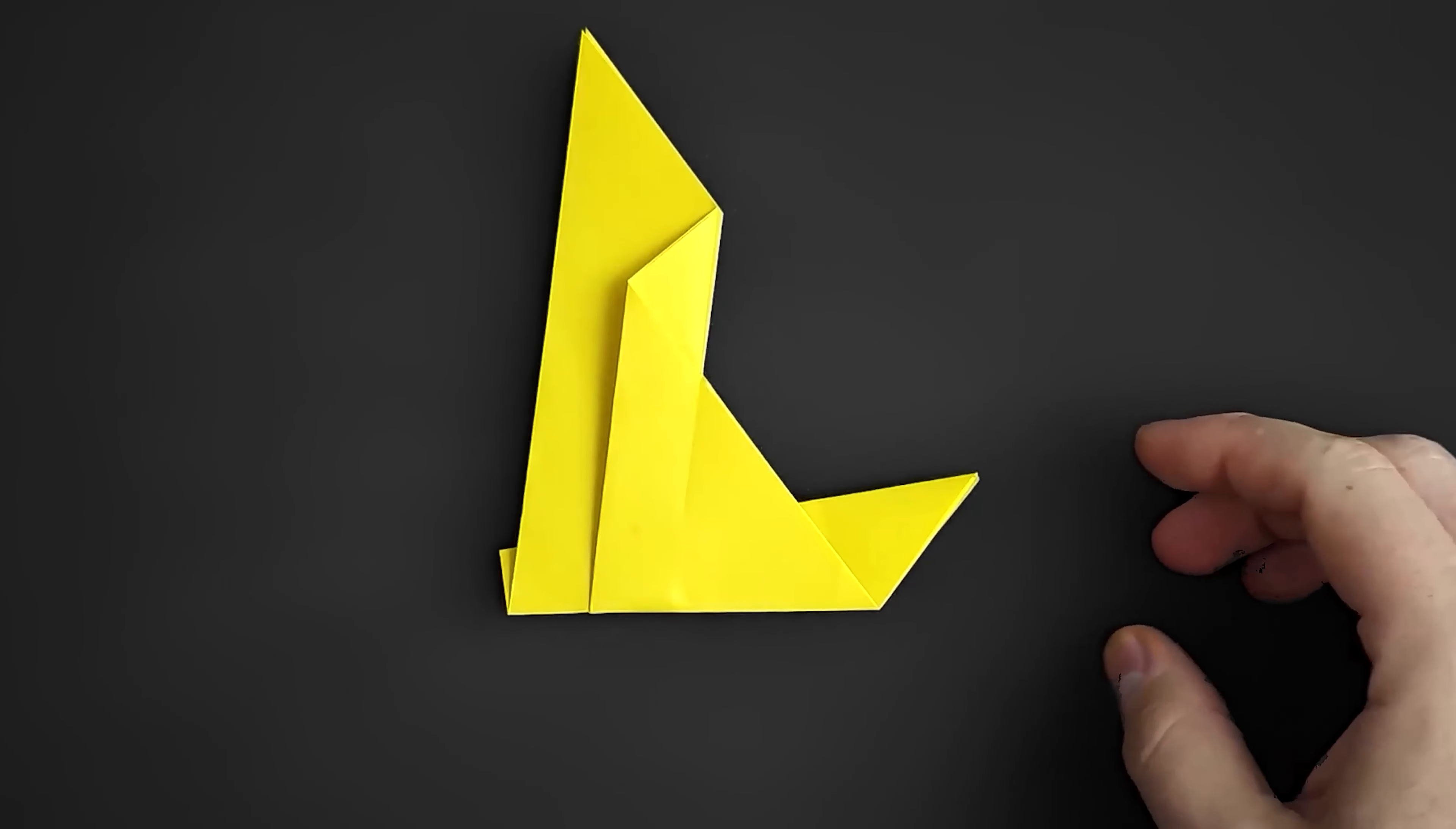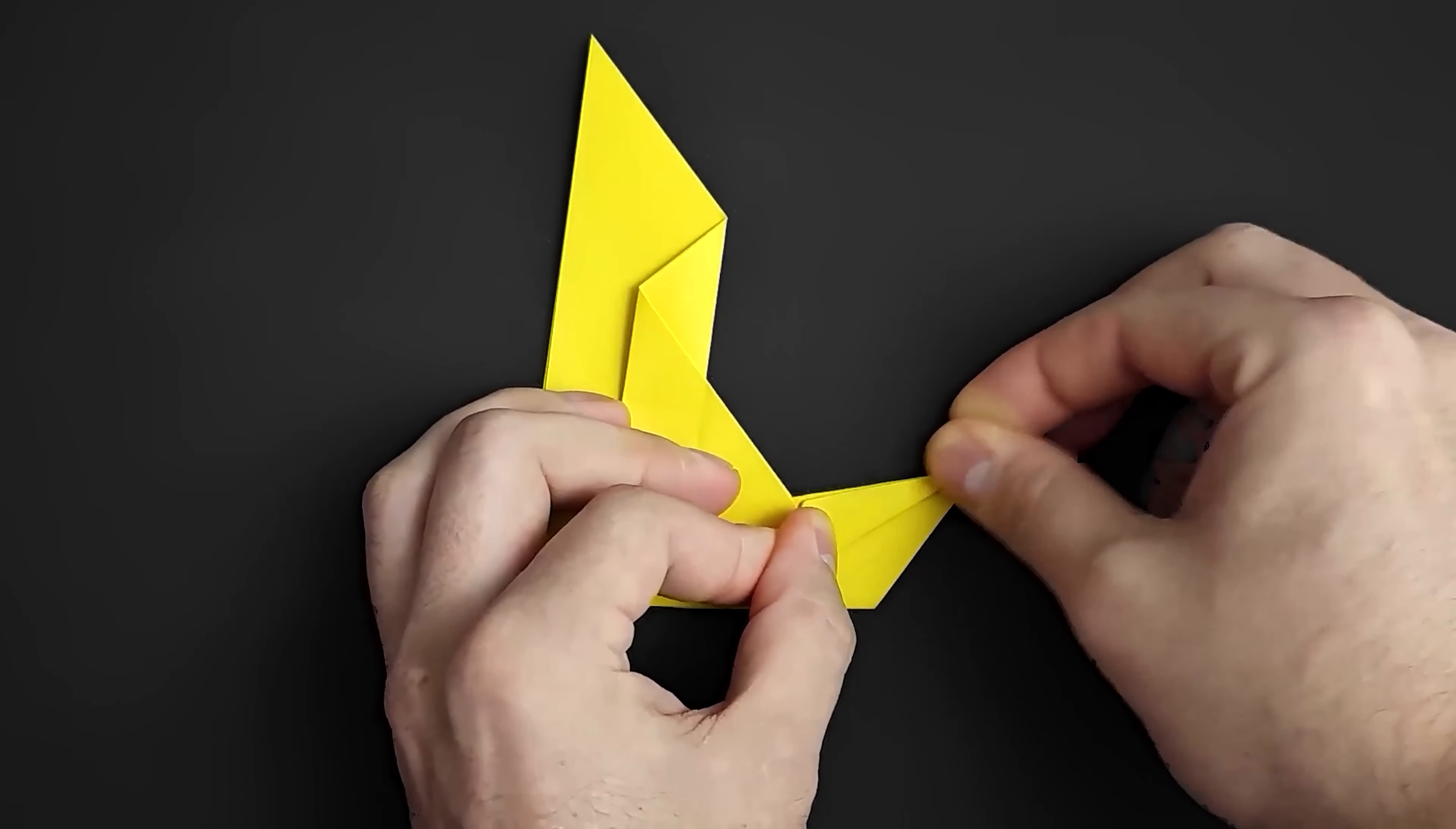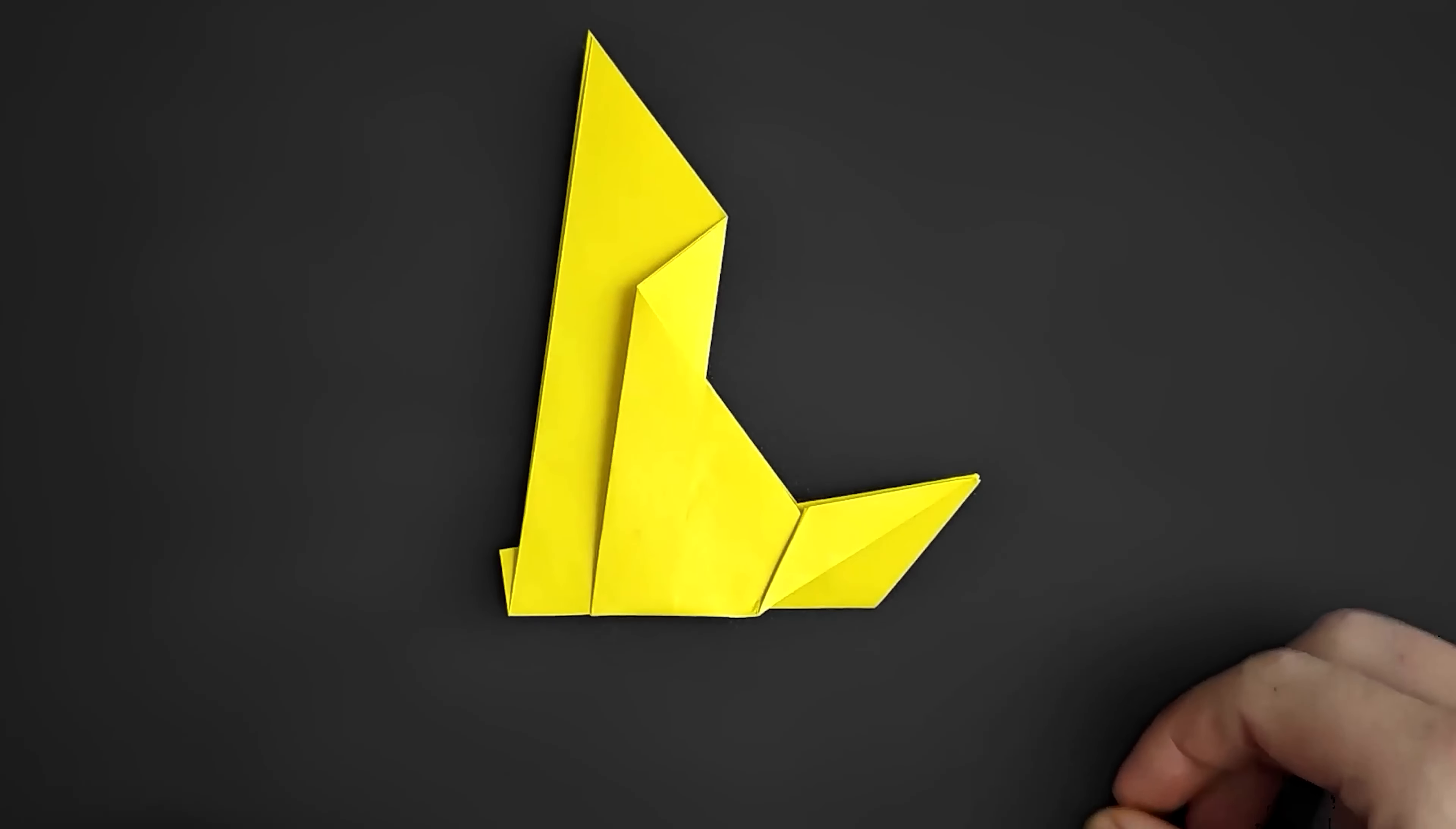Let's start by folding a new diagonal here. To do this, just take the bottom edge and bring it to the top. Reinforce and unfold it.